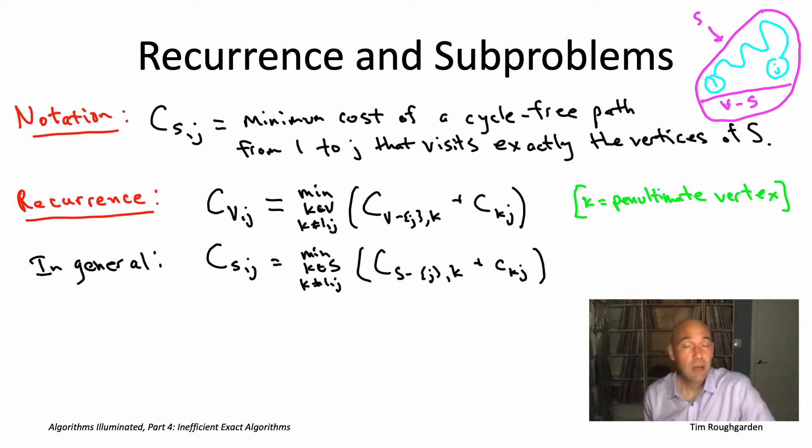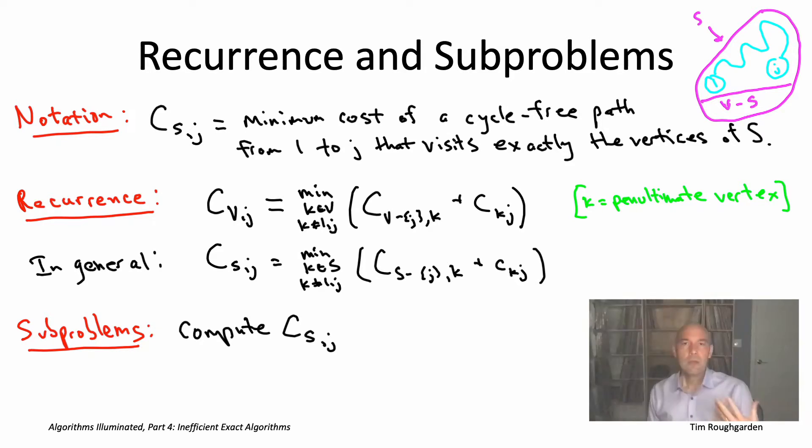So this now tells us exactly what our subproblems should be. Basically, we need a subproblem for every term that might show up in one of these recurrences. So for every choice of the vertex subset capital S, and for every choice of that last vertex little J, we're going to need a separate subproblem to compute that capital C S comma J. So which of these terms do we need to worry about? Which choices of capital S and little J actually make sense?